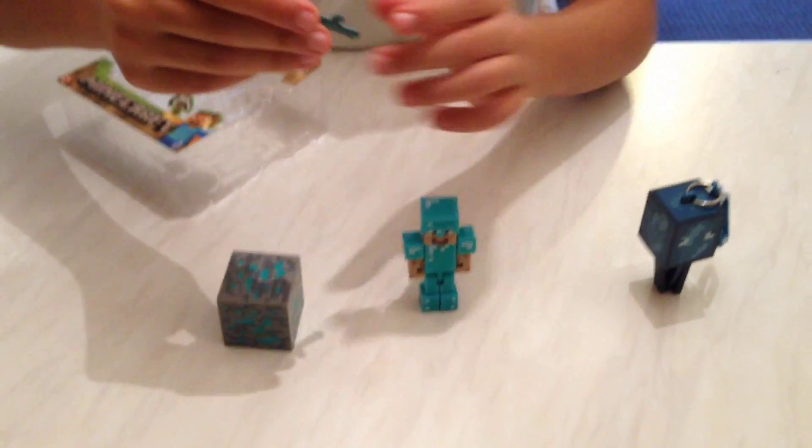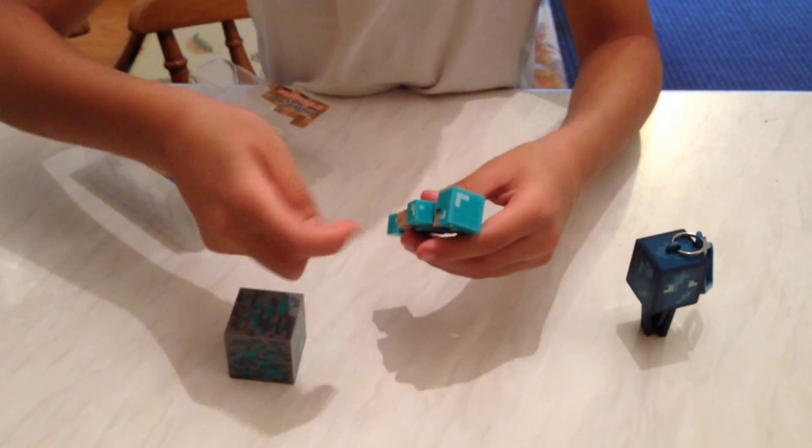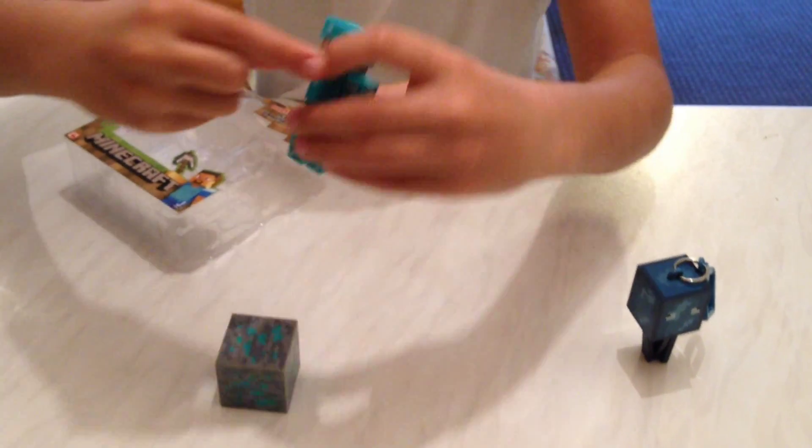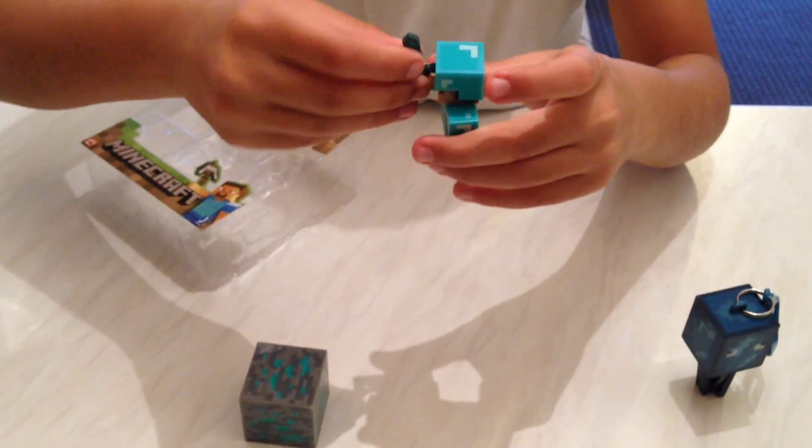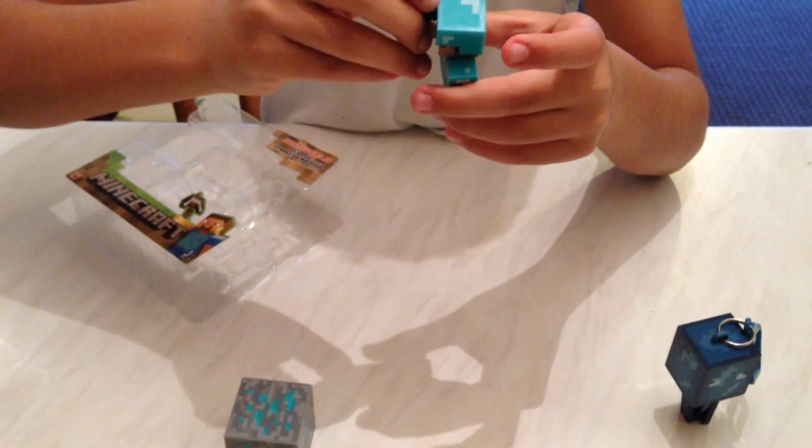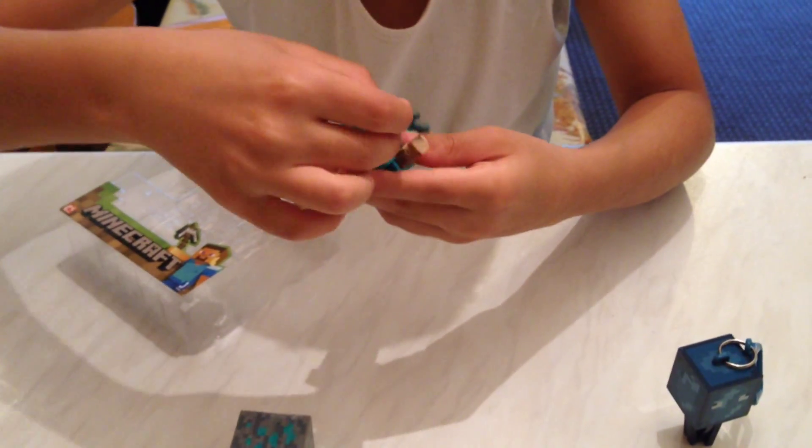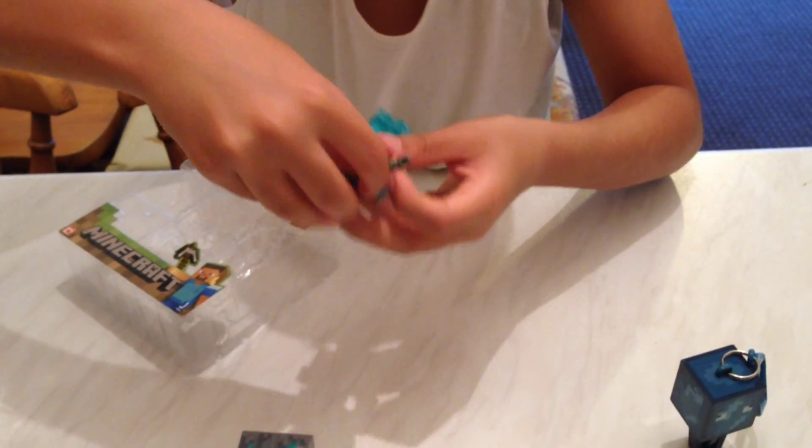This is another character, the squid, which his legs can move. Okay, this is Steve. He can move lots of his body parts like his legs, his arms. He can twist his head around 360 degrees, the whole turn.